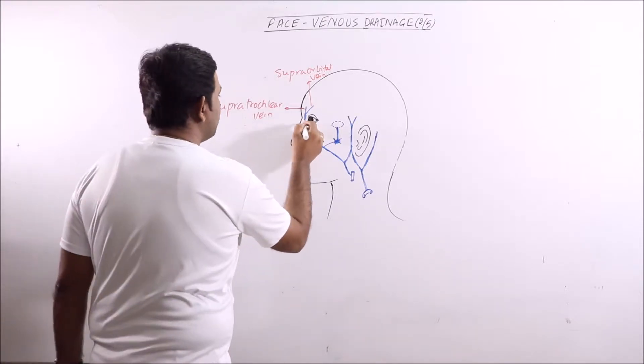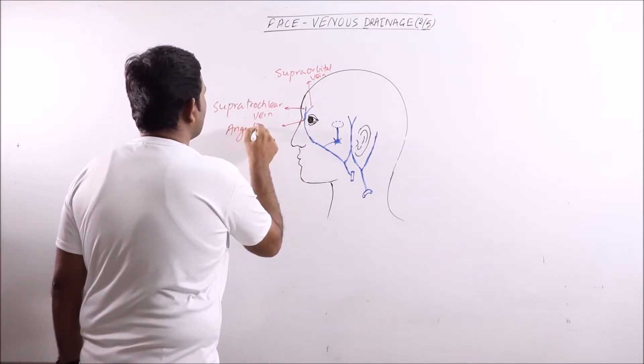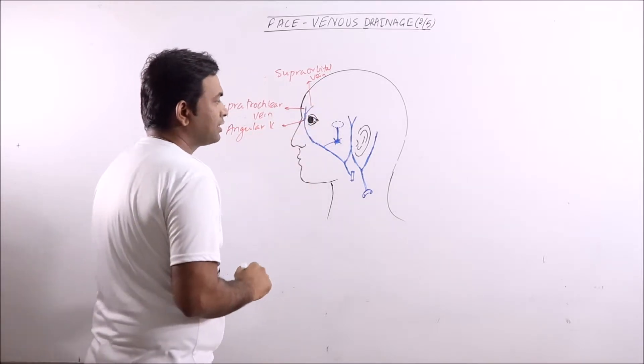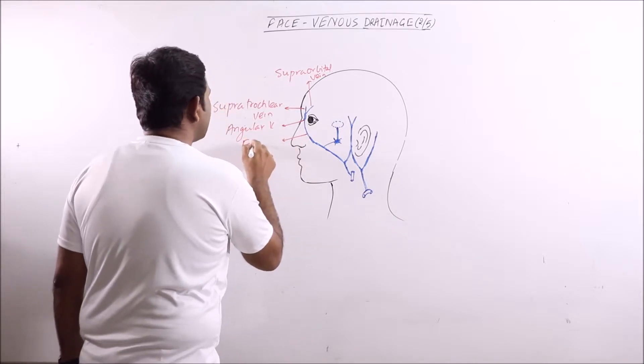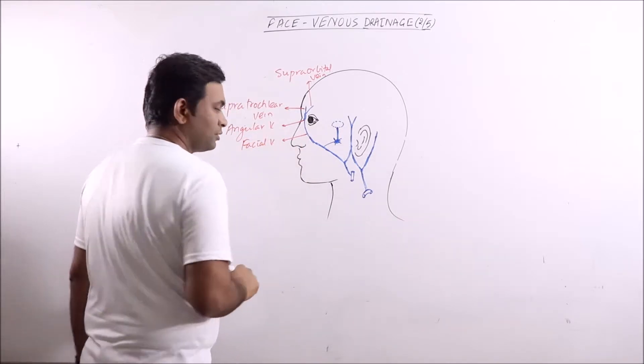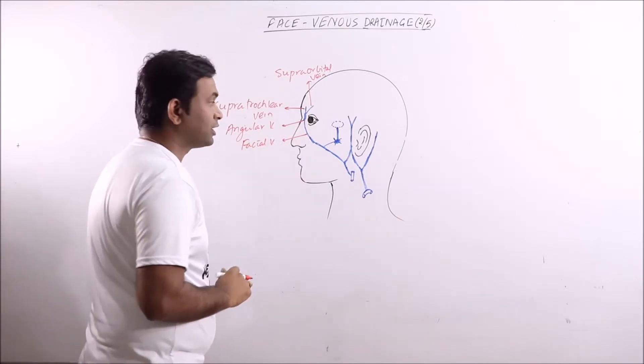Both veins fuse and form the angular vein near the angle of the eyes. Then it continues as the facial vein. Basically, the facial vein is the most important vein which drains most of the face.